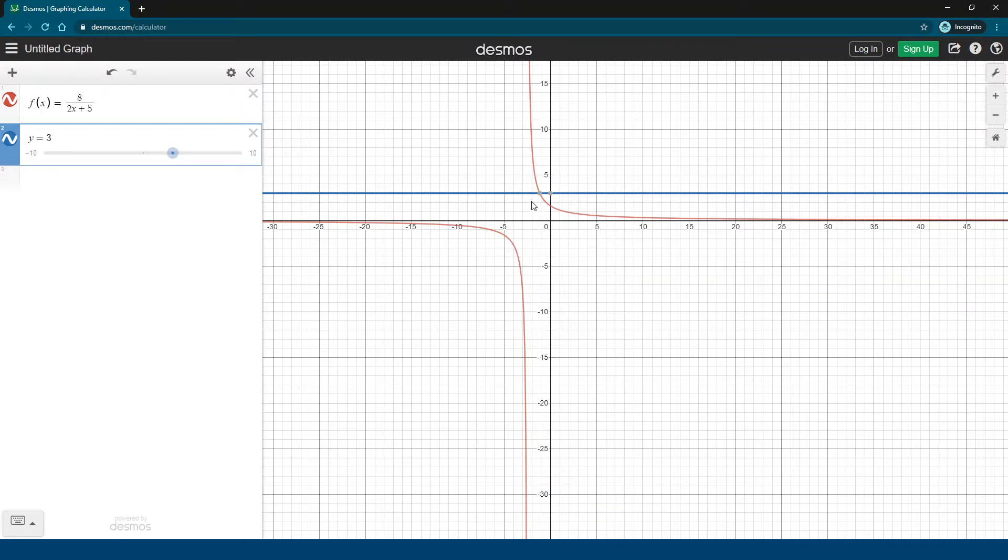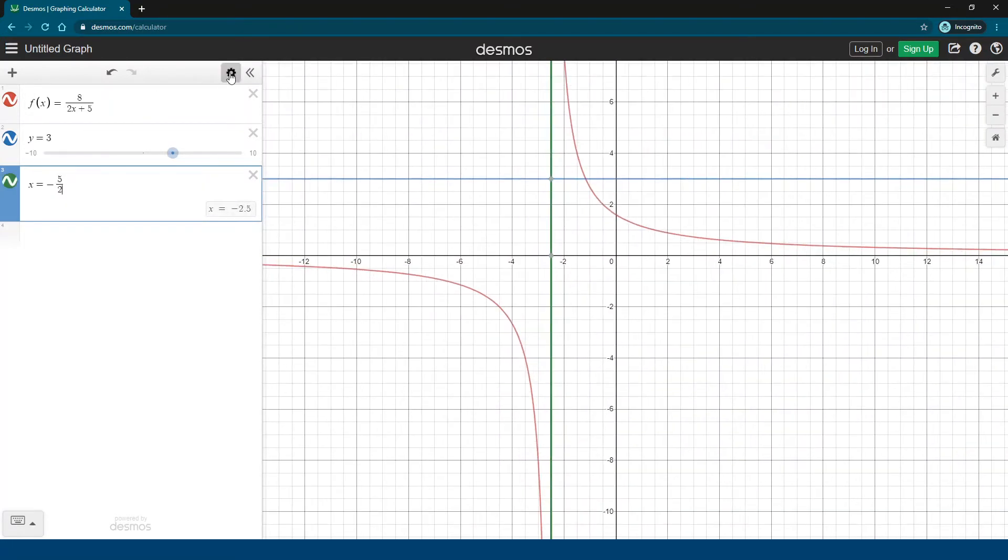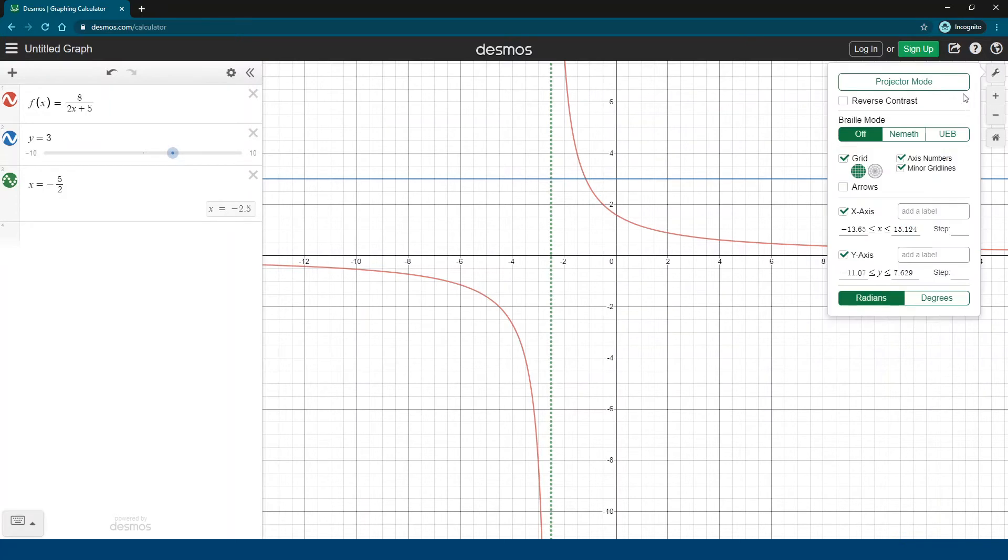Now, if you can read this equation, you can see that x is not allowed to be negative 5 halves. That would make this denominator 0. So I'm going to just plot that as well: x equals negative 5 halves. There it is as kind of a green line. I'm going to turn that into a dashed line, maybe a dotted line. Let's make this a little bit easier to see.